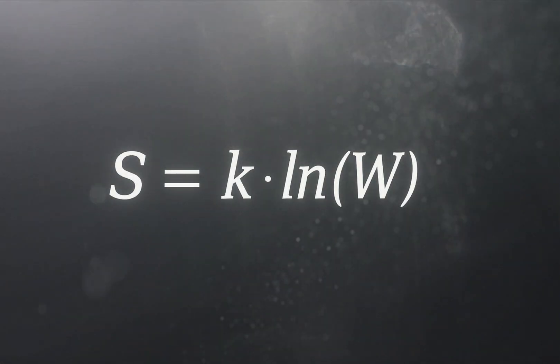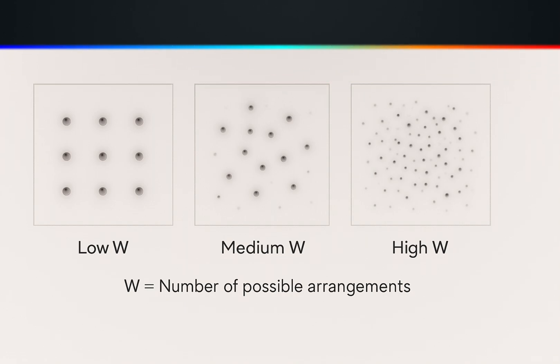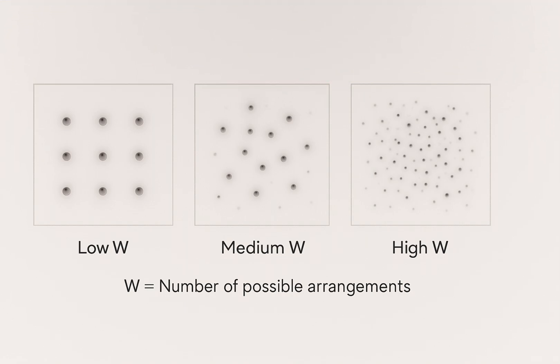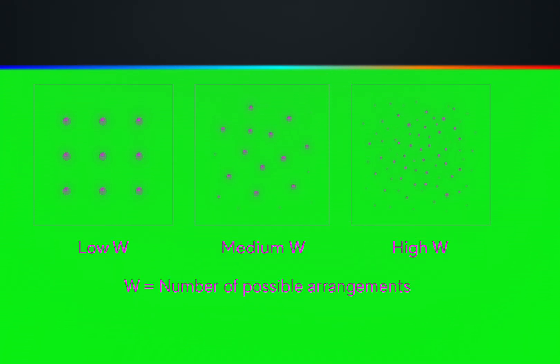We even measure it with an equation, S equals K log W. The more ways particles can arrange themselves, the higher the entropy. W stands for the number of possible arrangements.